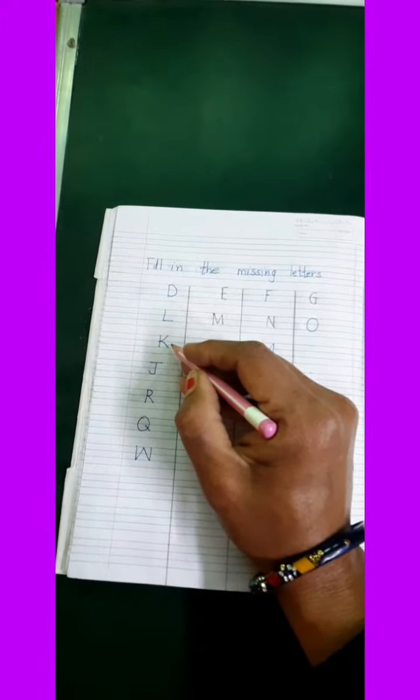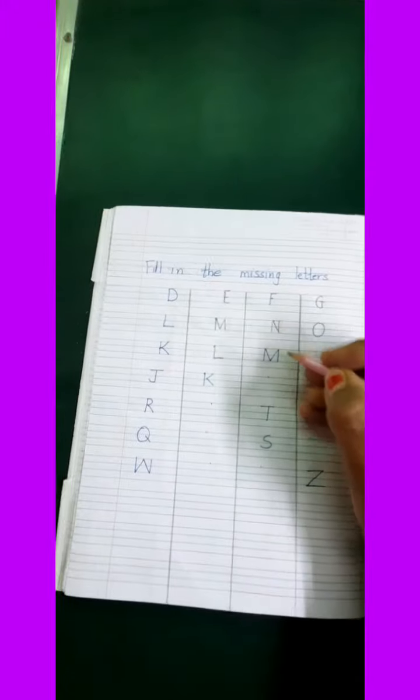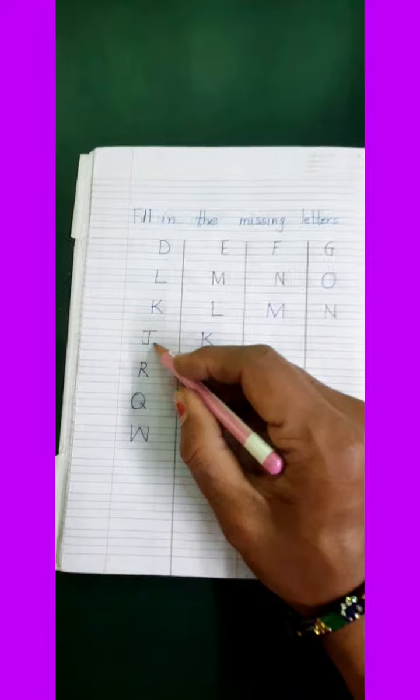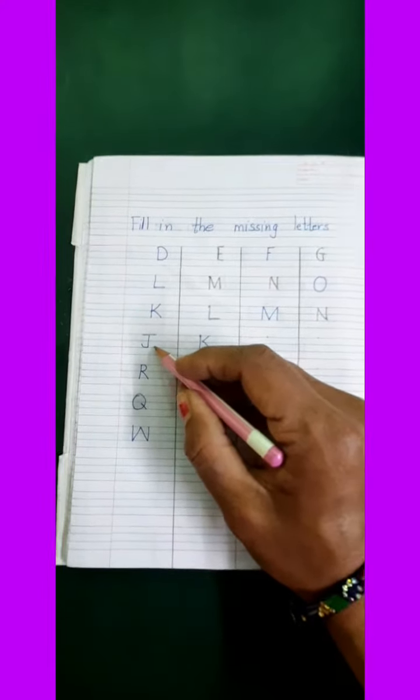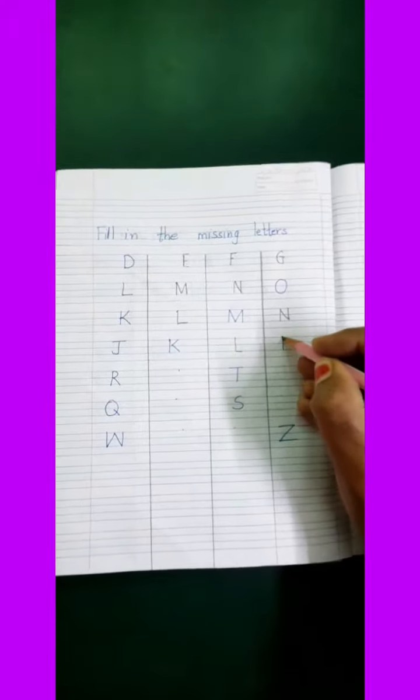Now what letter is this children? K. What comes after K? L. After L children, M. Then children, N. Now what letter is this children? J. What comes after J? K. After K children, L. After L children, M.